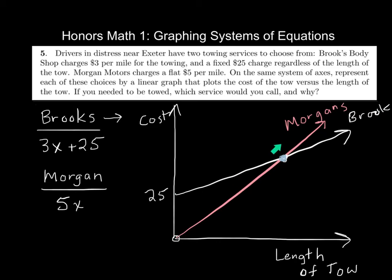At what point does Morgans become more, or sorry, become more expensive? So how did you figure that out? You can just set both these equations equal to each other. 5x equals 3x plus 25. So that would be 2x equals 25. So x equals 12 and a half. So I know that this is 12 and a half comma something.